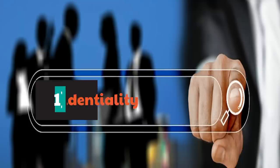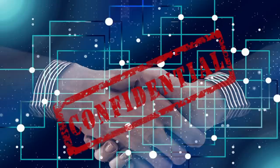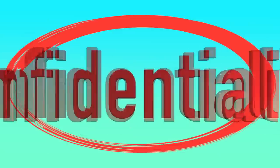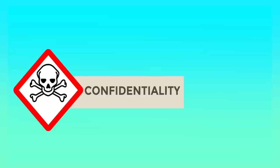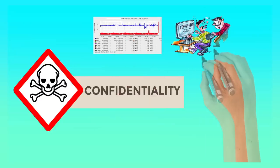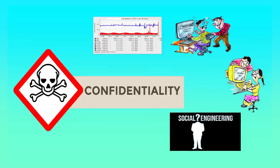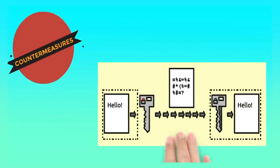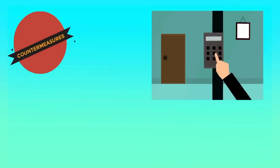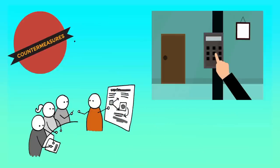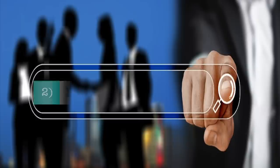The first security principle is confidentiality. It ensures that the necessary level of secrecy is enforced at each junction of data processing and prevents unauthorized disclosure. This level of confidentiality should prevail while data resides on systems and devices within the network, as it is transmitted, and once it reaches its destination. Threat sources to confidentiality include network monitoring, shoulder surfing, stealing password files and social engineering. Countermeasures include encrypting data as it is stored and transmitted, using network padding, implementing strict access control, data classification, and training personnel on proper procedures.